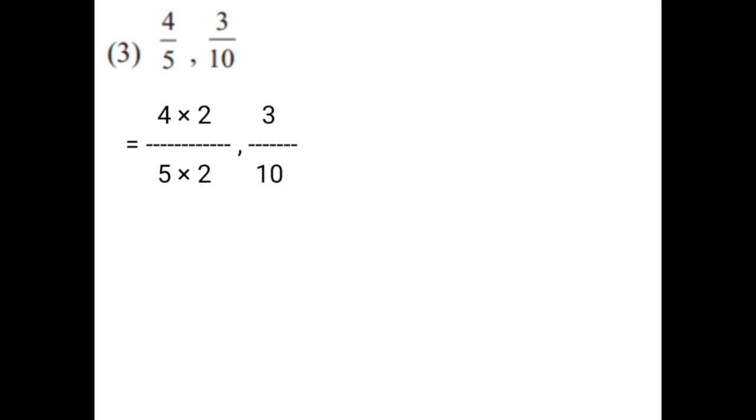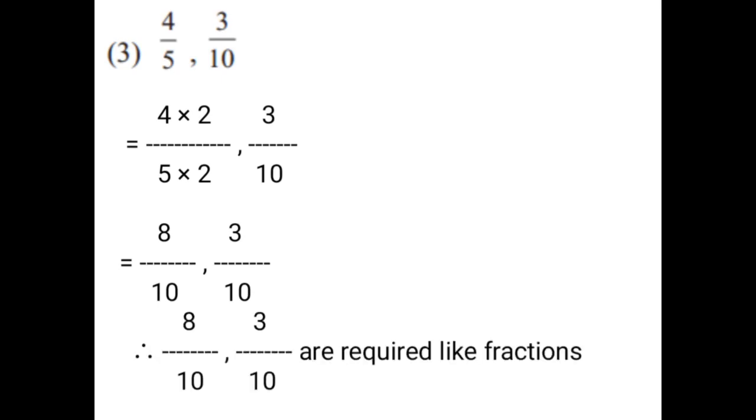4 upon 5 and 3 upon 10. To make the denominators equal on the first fraction, you have to multiply by 2 on numerator and denominator. That is equal to 4 upon 5 multiplied by 2 on numerator and 2 on denominator. Second fraction 3 upon 10, write as it is. Therefore, 8 upon 10 and 3 upon 10 are the required like fractions.